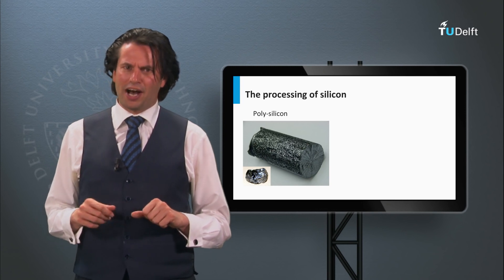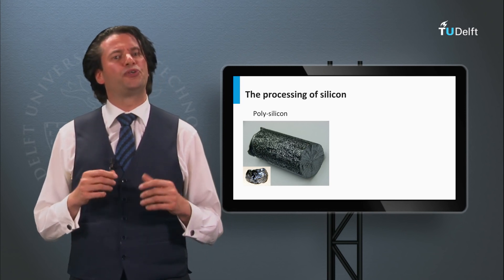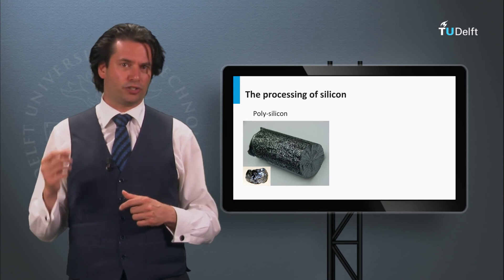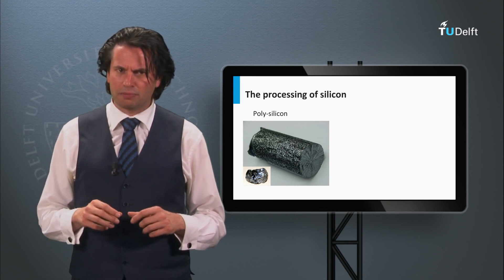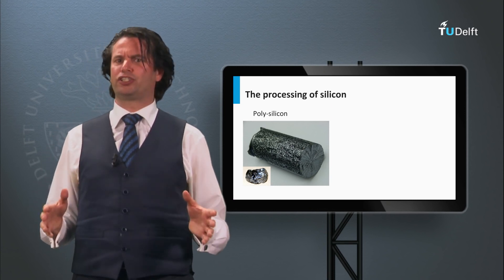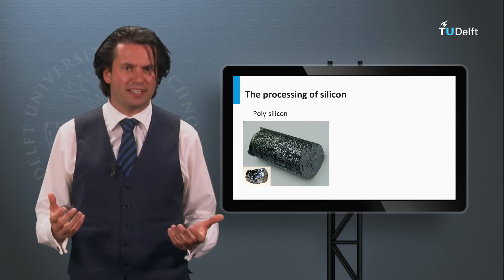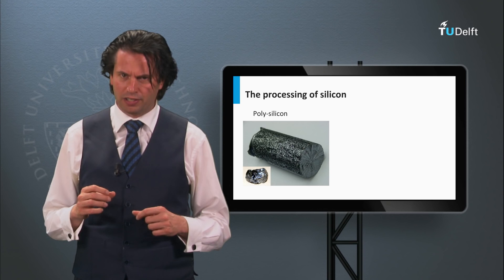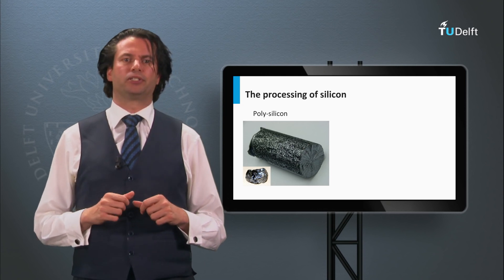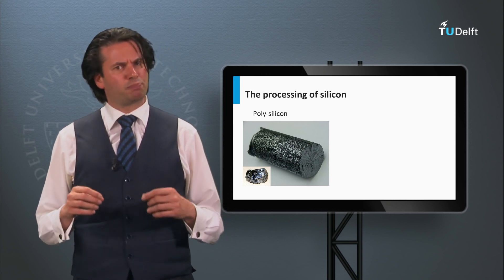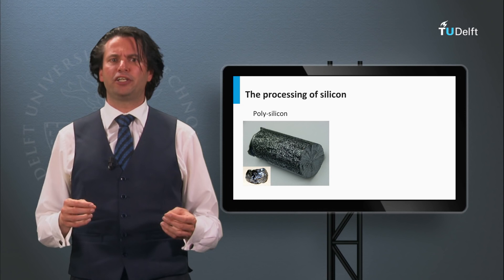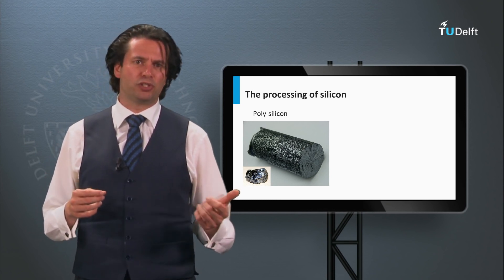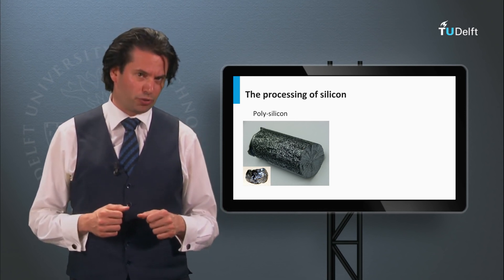Lastly, I would like to mention an alternative approach: upgraded metallurgical silicon. In this process, metallurgical silicon is chemically refined by blowing gases through the silicon melt to remove the impurities. Although this process is cheap, the purity of its silicon is not as high as the Siemens or the fluidized bed reactor approach.